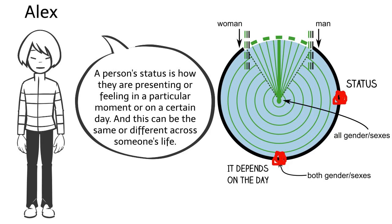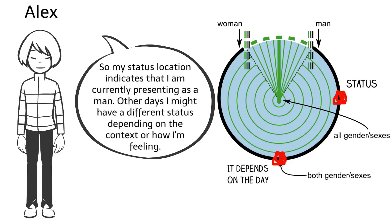A person's status is how they are presenting or feeling in a particular moment or on a certain day. And this can be the same or different across someone's life. So my status location indicates that I am currently presenting as a man. Other days I might have a different status depending on the context or how I'm feeling.